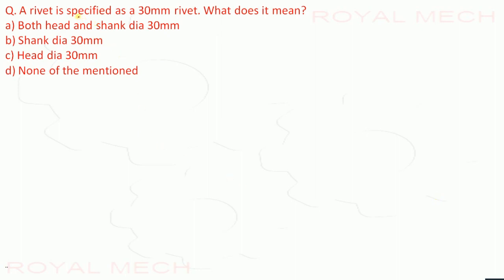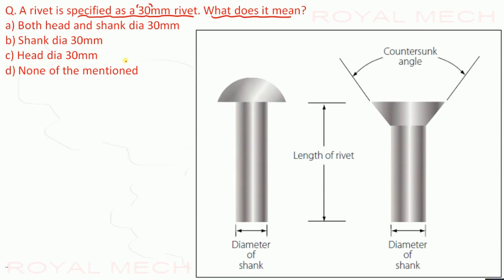A rivet is specified as a 30 mm rivet. What does it mean? The given options are: both head and shank diameter are 30 mm; shank diameter is 30 mm; head diameter is 30 mm; or none of the above. When a rivet is specified as 30 mm, that means the diameter of the shank is 30 mm. Therefore option B, shank diameter is 30 mm, is the correct answer.